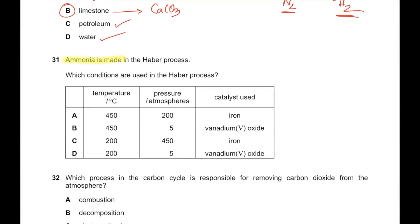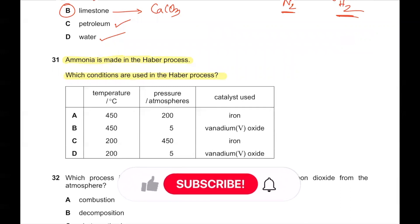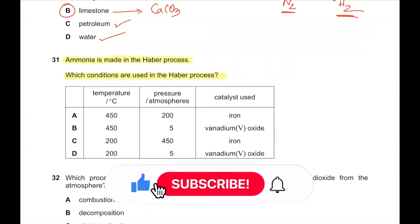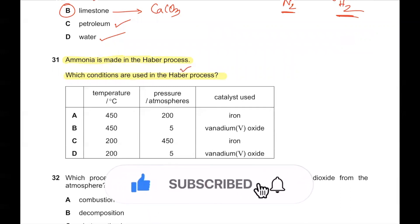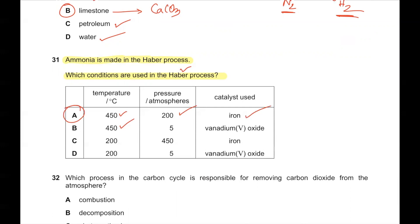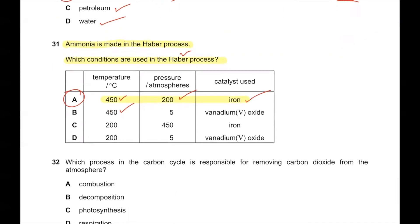Question number 31. Ammonia is made in the Haber process. The conditions used are 450°C temperature, 200 atmospheres pressure, and iron as a catalyst. Just keep this memorized — it is important and the same question is repeated frequently.